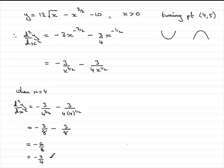And this is essentially negative. So that means that therefore we have a maximum. A maximum turning point then at 4, 5.